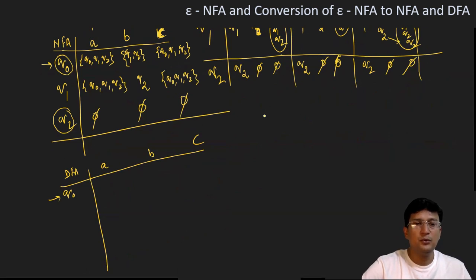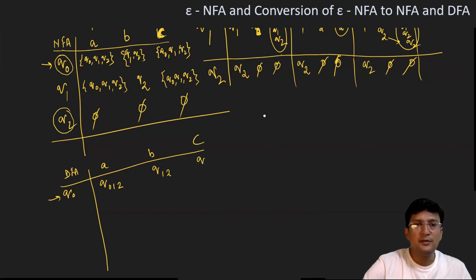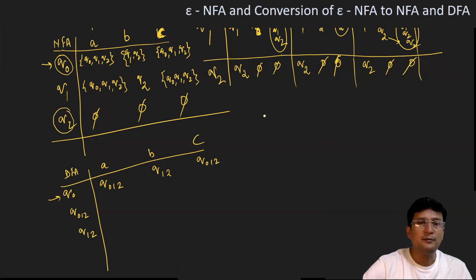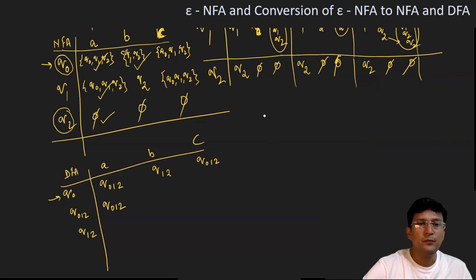q0 leads to {q0, q1, q2} on 'a', so I make a new state named q012. On 'b', q0 moves to {q1, q2}, so I write it as state q12. On 'c', q0 moves to {q0, q1, q2}, written as q012. So two new states are found: q012 and q12. Now for state q012 on 'a': q0 moves to {q0,q1,q2}, q1 moves to {q0,q1,q2}, and q2 moves nowhere — the union is {q0,q1,q2}, written as q012. On 'b': q0→{q1,q2}, q1→{q2}, q2→nothing — union is {q1,q2}, written as q12.